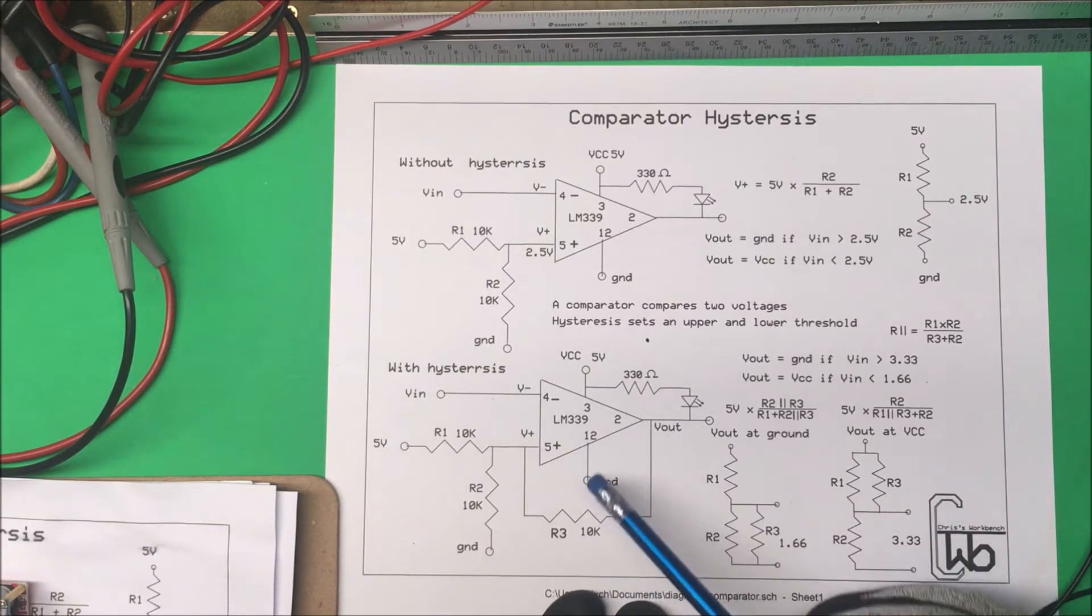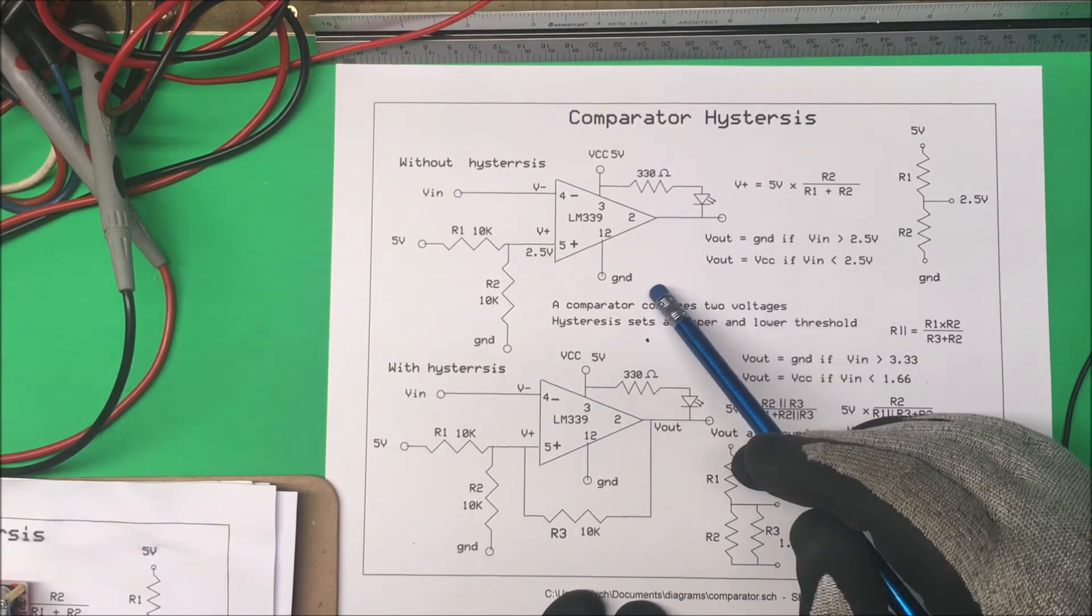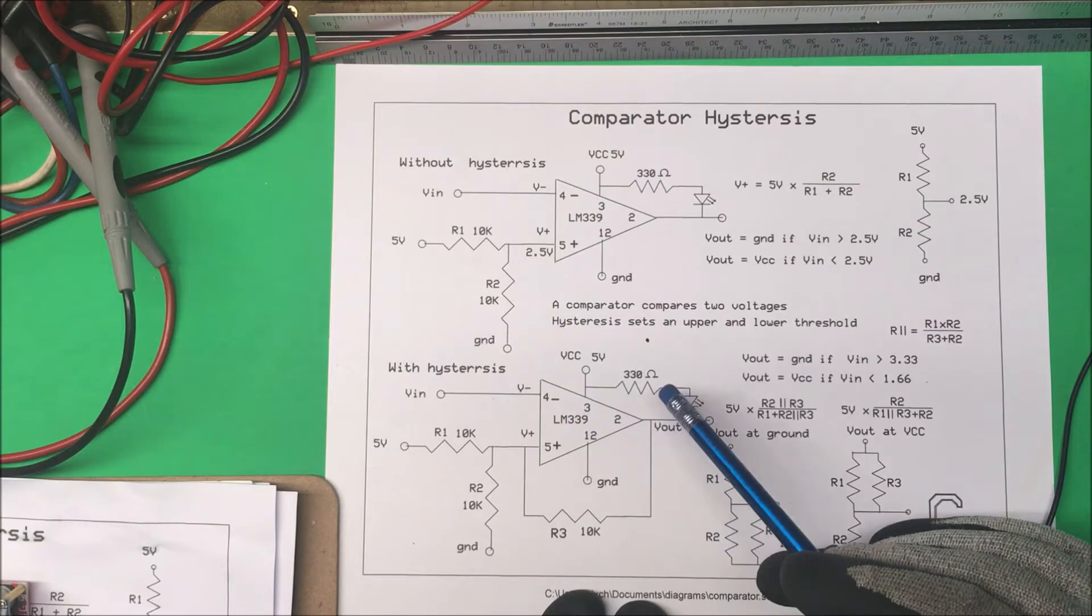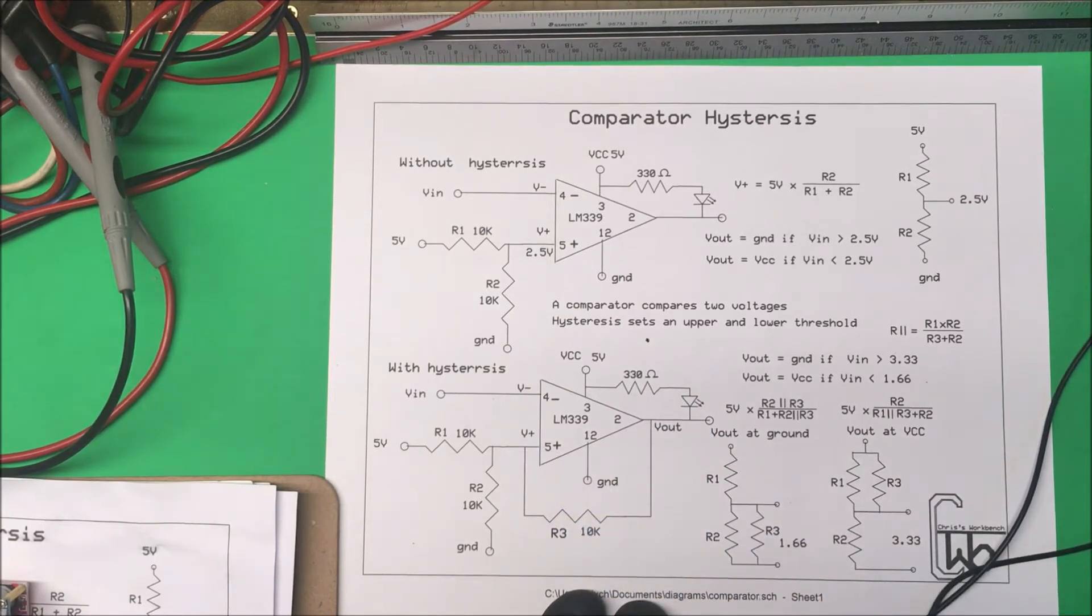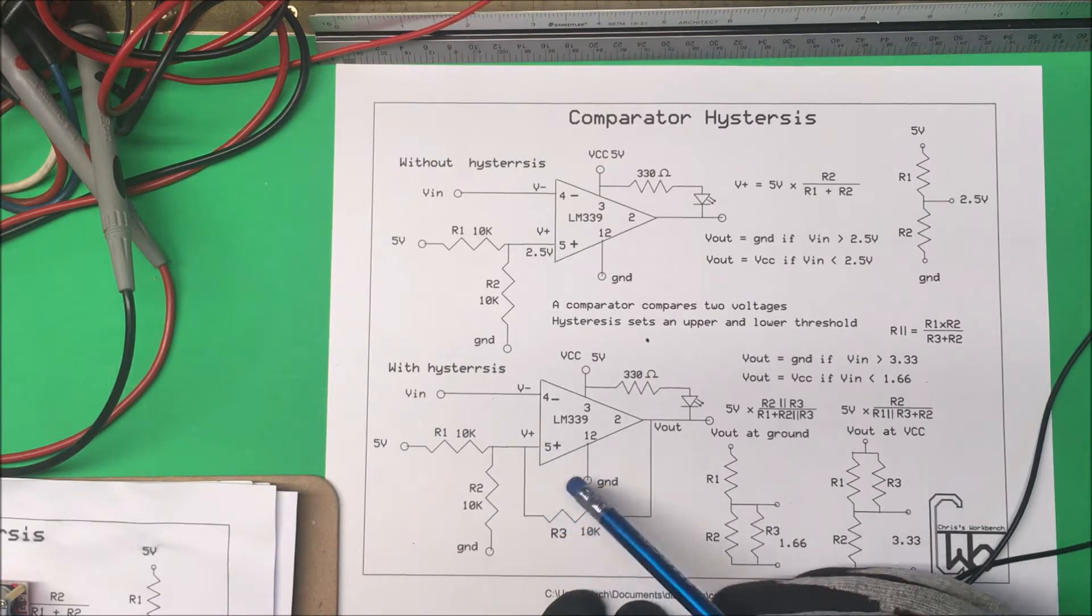So here it is down here. The only thing we have to do is just put a feedback resistor from the output back to pin 5 here, the positive pin right here.